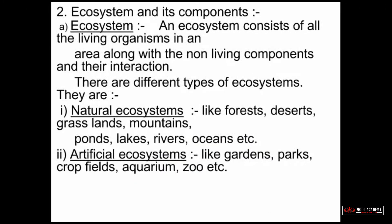Ecosystem and its components: An ecosystem consists of all the living organisms in an area along with non-living components and their interactions. Ecosystems are of two kinds — natural and artificial.